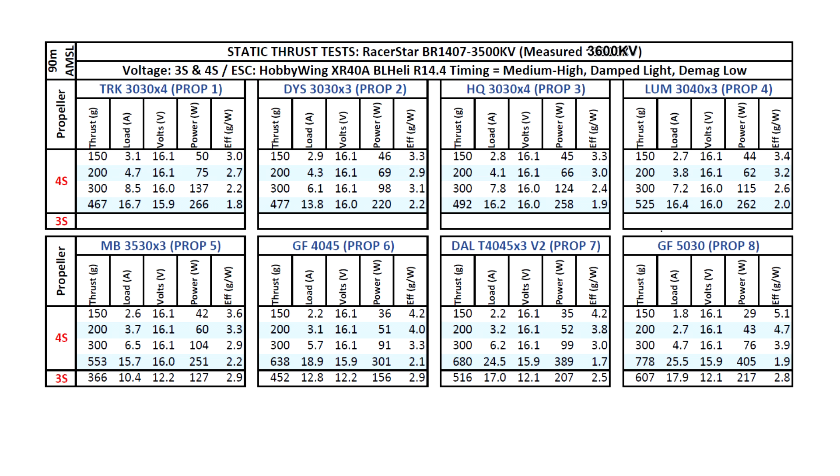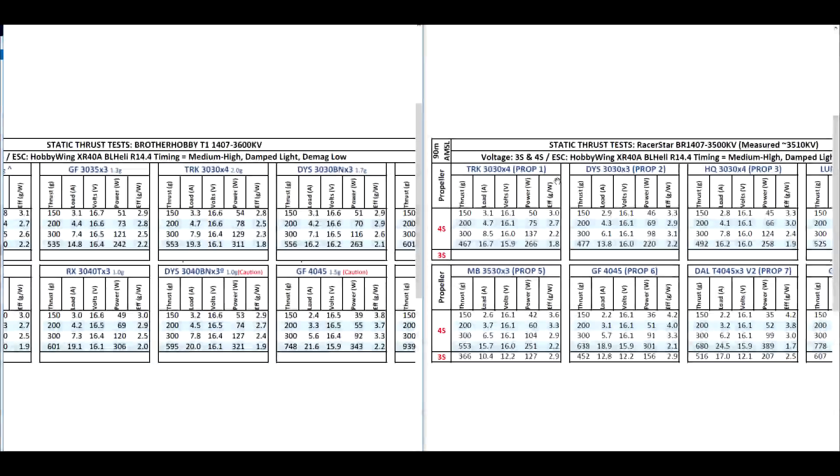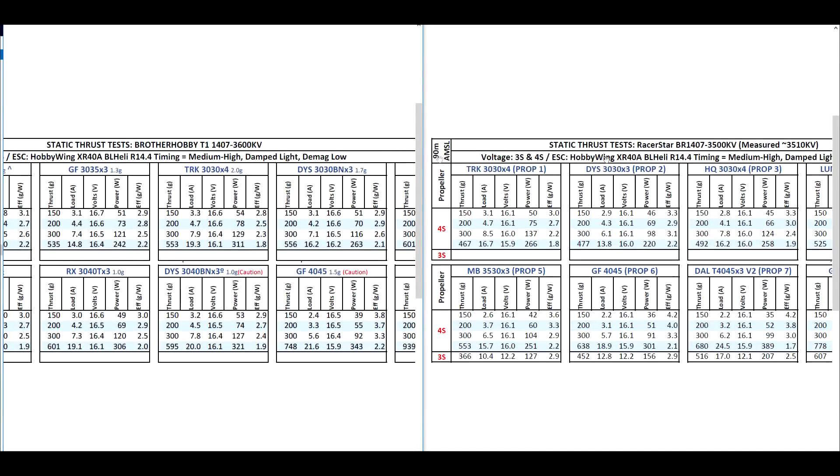All right, let's look at comparing this with the Brother Hobby, which is the gold standard for this motor class. So comparing the Racer Star against the Brother Hobby, we can see that with the Team Racecraft 3030x4, there's quite a bit of difference. Almost 100 grams between these two. The Brother Hobby getting 553, and this one only 467. Although the amps remain low, so that's the good thing. It's not pulling more amps than it needs. So that's pretty good.